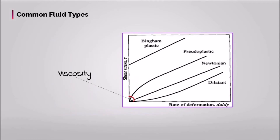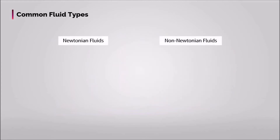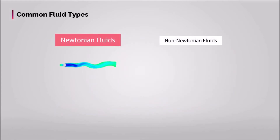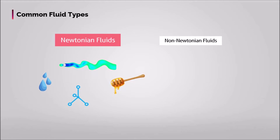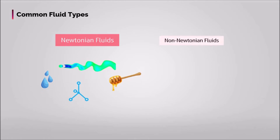The slope of this curve between the shear stress and shear rate is apparent viscosity. Some examples of Newtonian fluids include water, organic solvents, and honey. For those fluids, viscosity is only dependent on temperature.